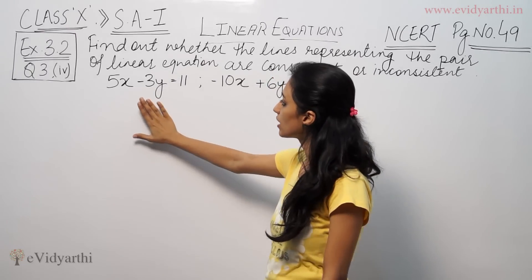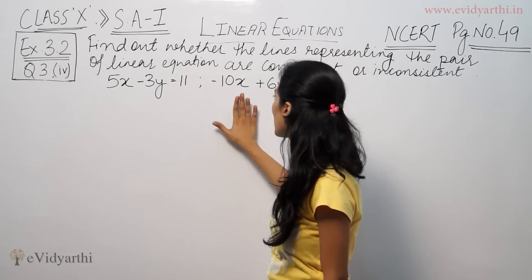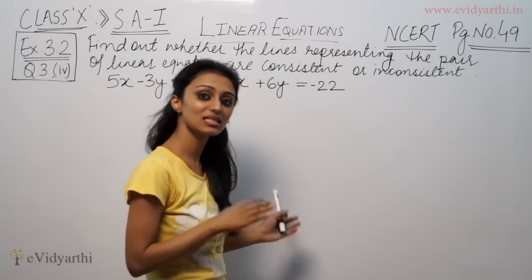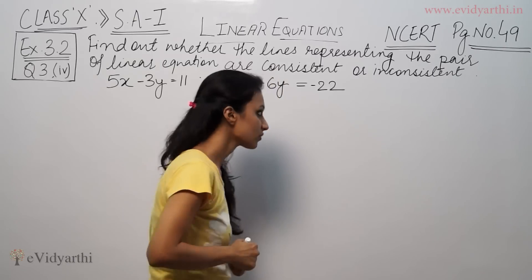Our equations given are 5x minus 3y equal to 11, minus 10x plus 6y equal to minus 22. We have to find out that it is consistent or inconsistent.